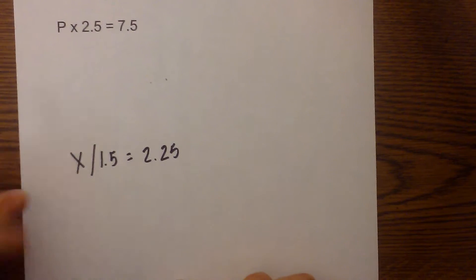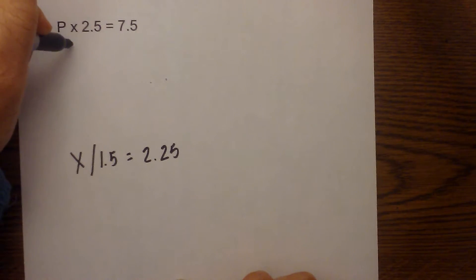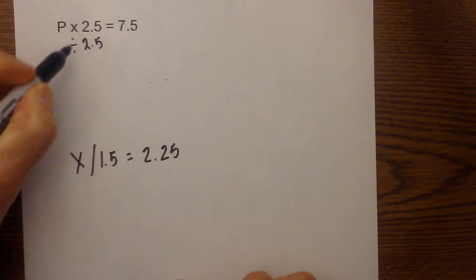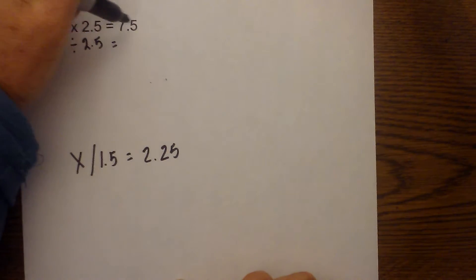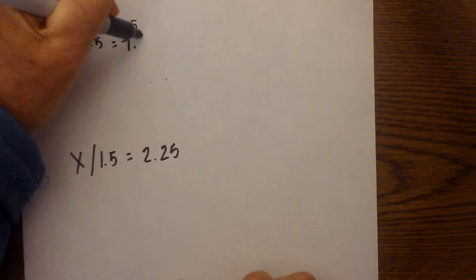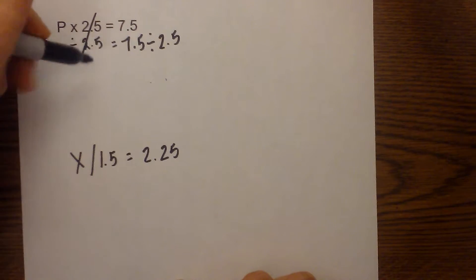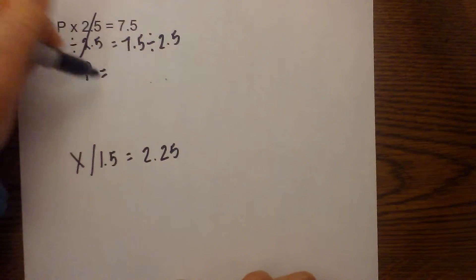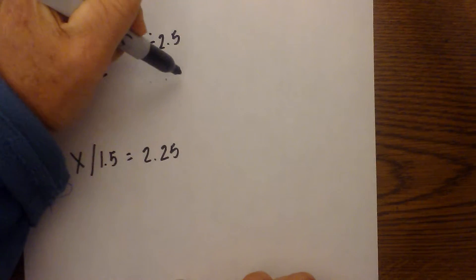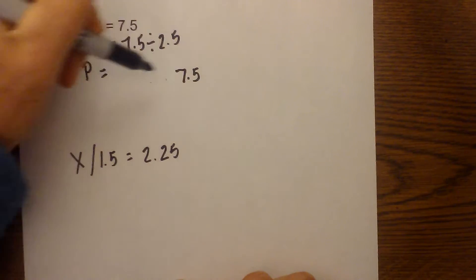Next up is we have one with multiplication. And we are going to undo and keep the same. So we are going to undo the multiplication with division. And what we do to one side we must complete to the other side. So now that will become 7.5 divided by 2.5. And so these cancel, bring down the P. And I am going to rewrite this into a form that I think is a little bit easier when you divide.